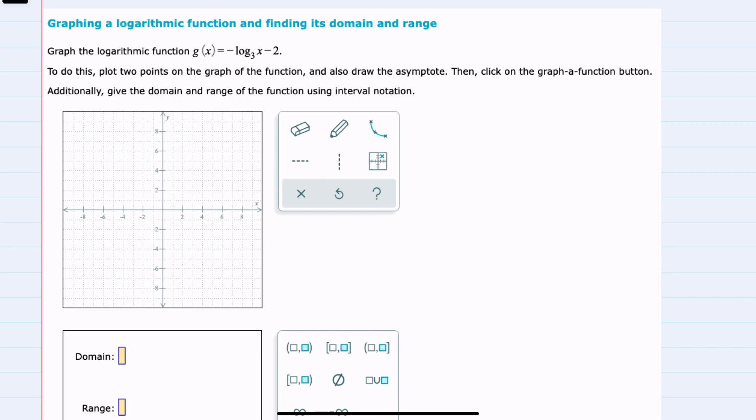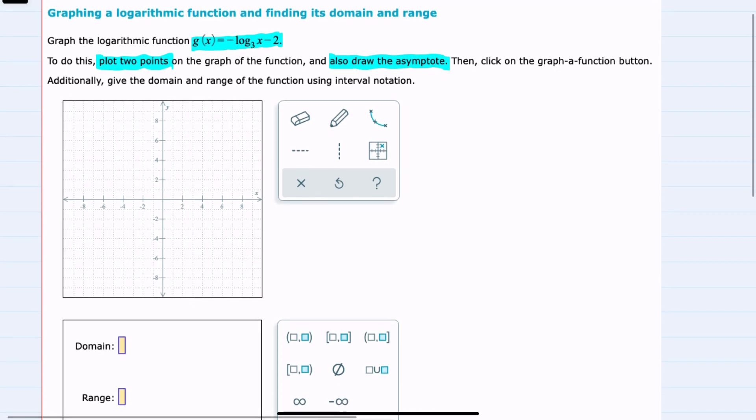We're asked here to graph g of x, and to do so by plotting two points and drawing the asymptote. And we're also asked for the domain and range of this function.